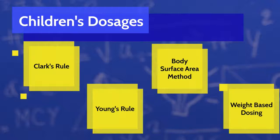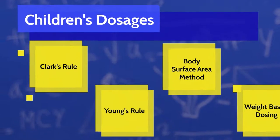Welcome to our lecture on children's dosages. Today we will be discussing how to calculate the dose of a medication for a child using four common techniques: Clark's Rule, Young's Rule, Body Surface Area Method, and Weight-Based Dosing.